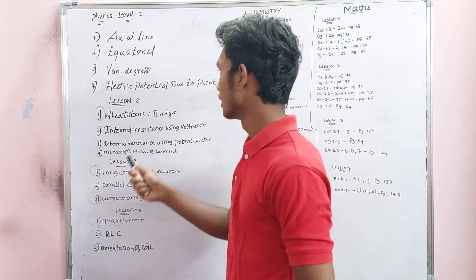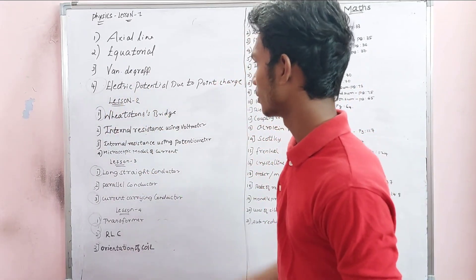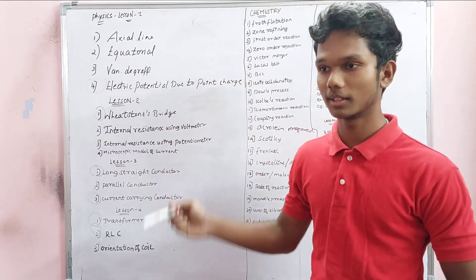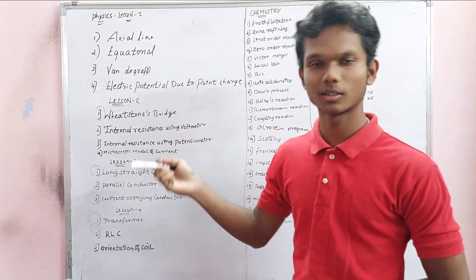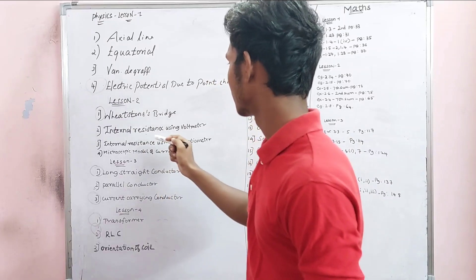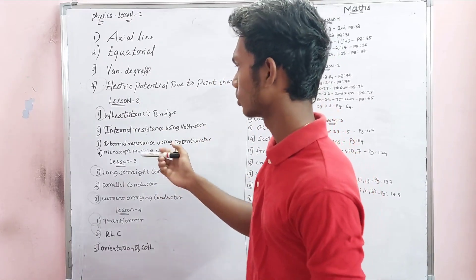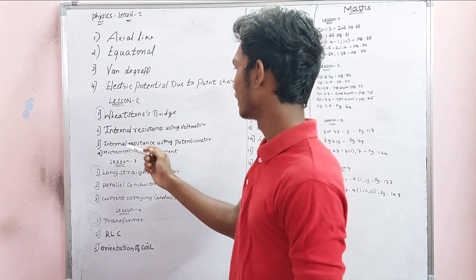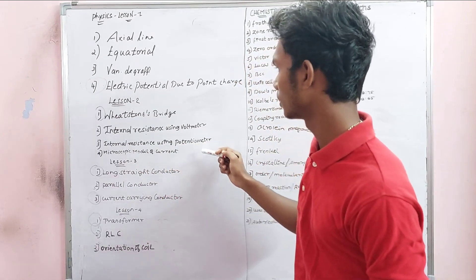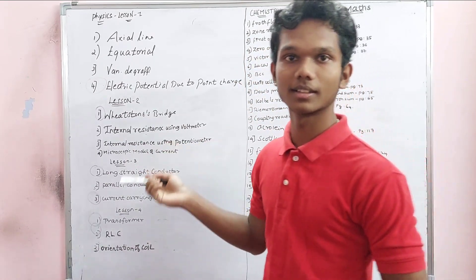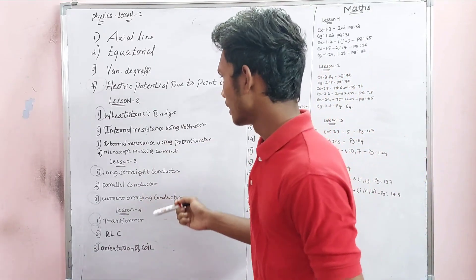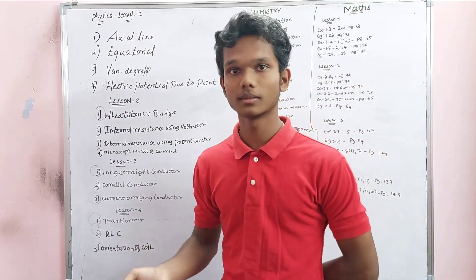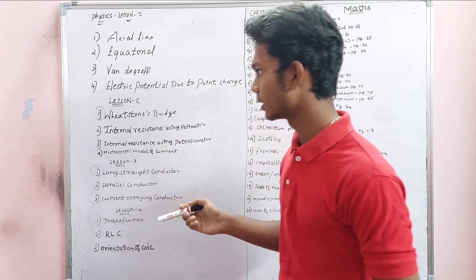Lesson 2 is Wheatstone Bridge — this is very important and the background is easy. Internal resistance using voltmeter — that's easy to do. Internal resistance using potentiometer — that's easy to do. Microscopic model of current — this lesson is easy to do.